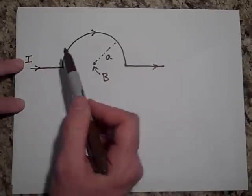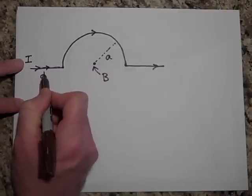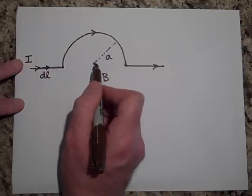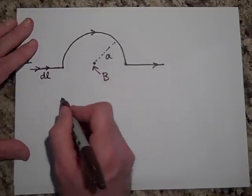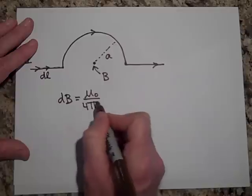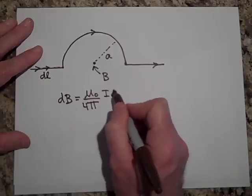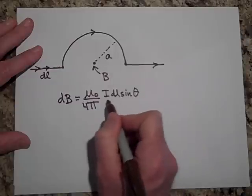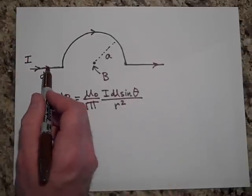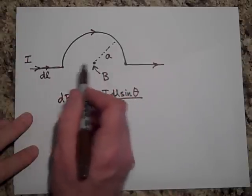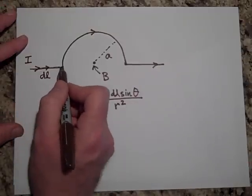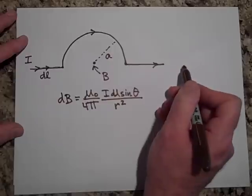The straight parts of the wire don't put any field at that point. If this is your DL and this is your R, the angle between DL and R is zero, so when you use the equation I·DL·sin(θ)/r², the sine of zero degrees is zero — so there is no magnetic field from those straight portions of the wire.